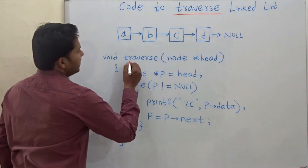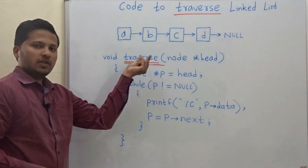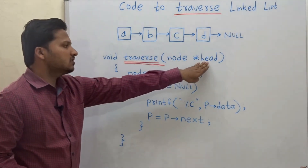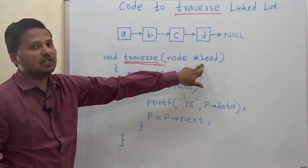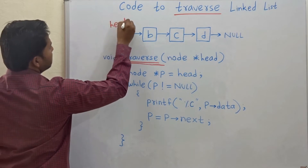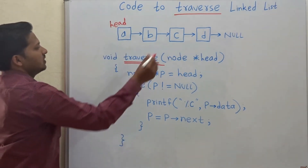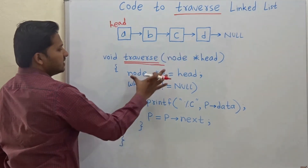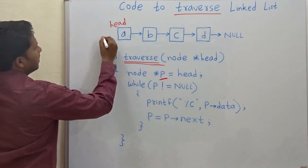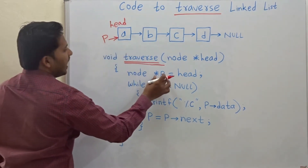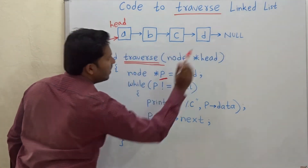The function name for traversing the linked list is 'traverse', and we have passed the head of the linked list as the parameter to this function. The head is the starting node of the linked list. Inside the function, pointer p will point to the head of the linked list, and this pointer p will help us traverse the whole linked list.